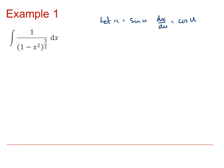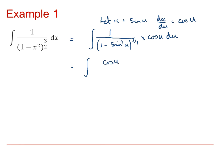We can make the substitution to say that the integral must be equal to the integral of 1 over (1 minus sin²(u)) to the power of 3 over 2, and instead of dx we end up multiplied by cos(u) du. On the denominator, 1 minus sin²(u) is cos²(u). So we've got cos(u) on the numerator, and (cos²(u)) to the power of 3 over 2 on the denominator.